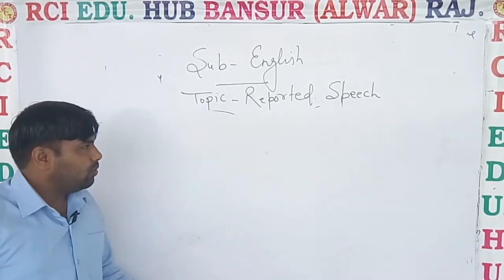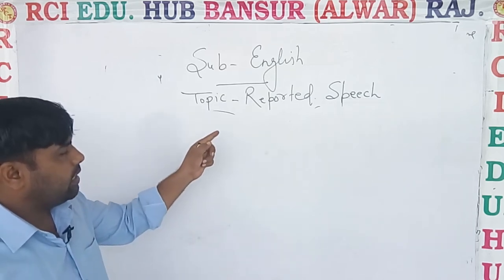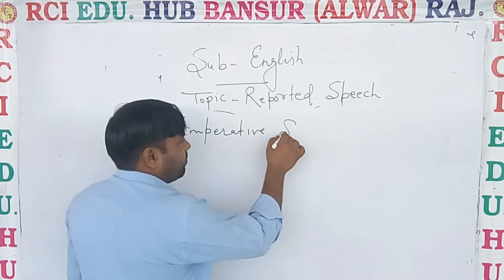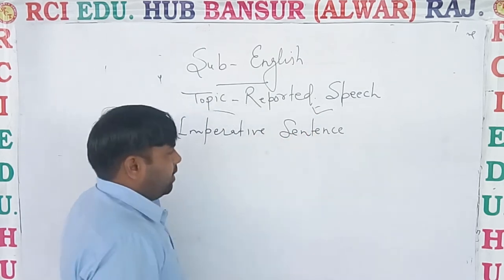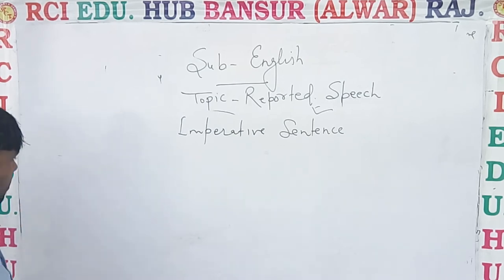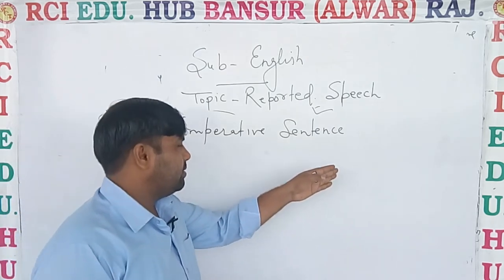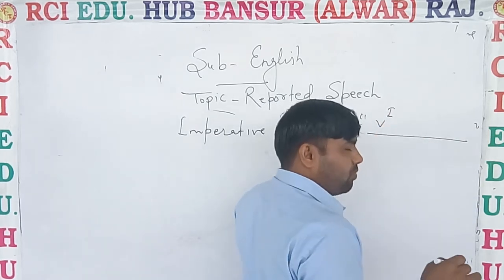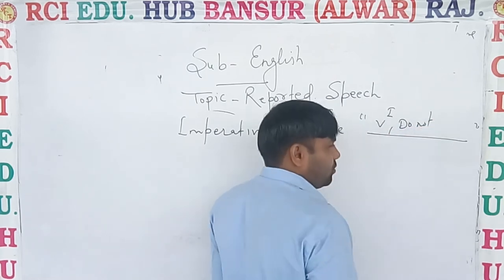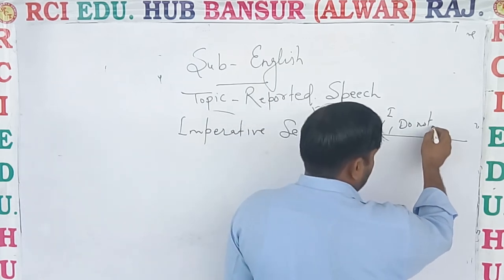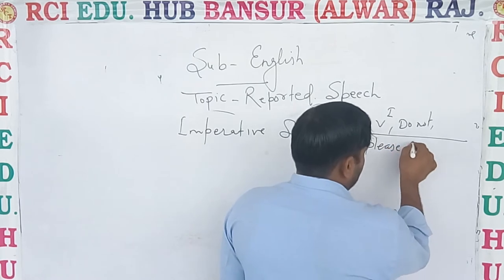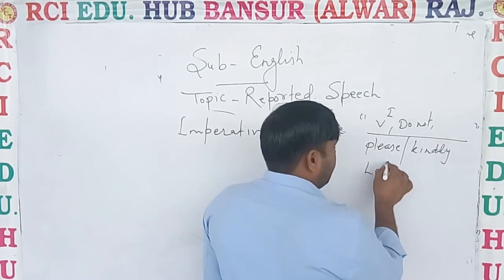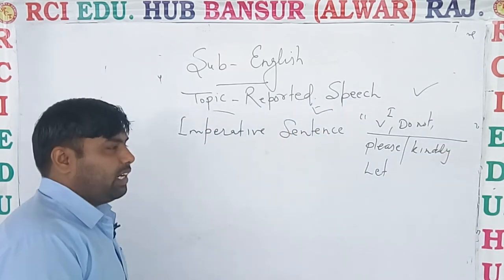Good morning students. Today we will start the next sentence type: imperative sentence. If an imperative sentence is there, how will you change it? How do you come to know it is an imperative sentence? Simple. If any sentence starts in reported speech with the first form of the verb, 'do not', 'please', 'kindly', or 'let', then it will be an imperative sentence.